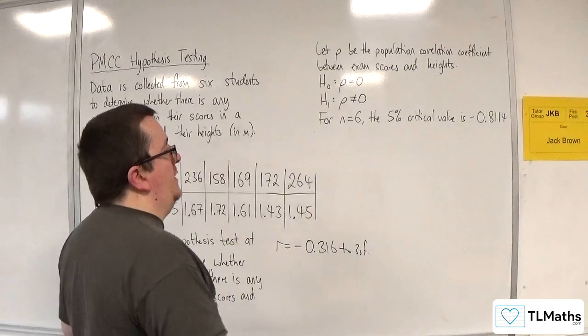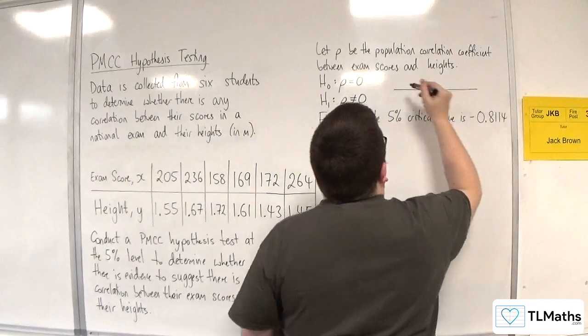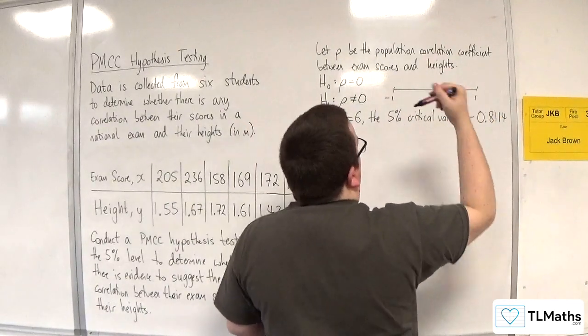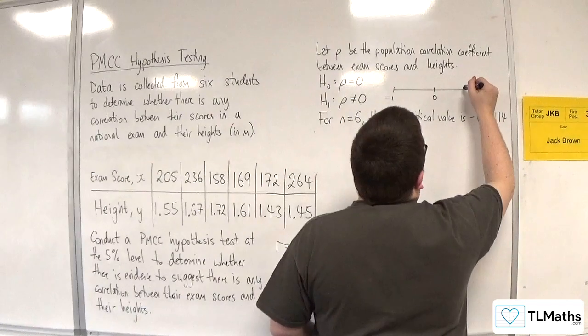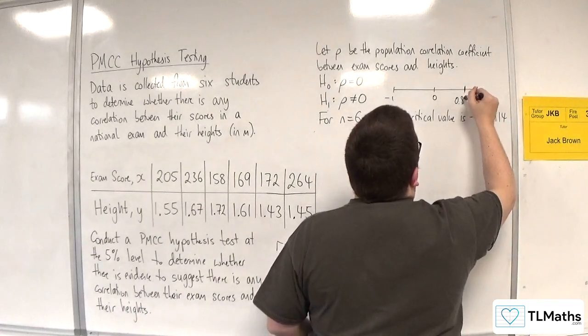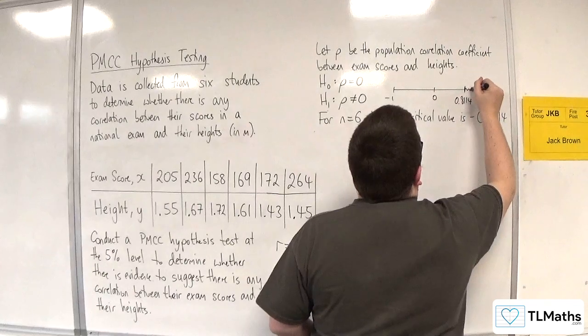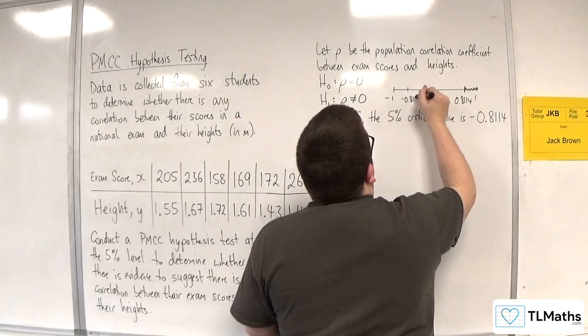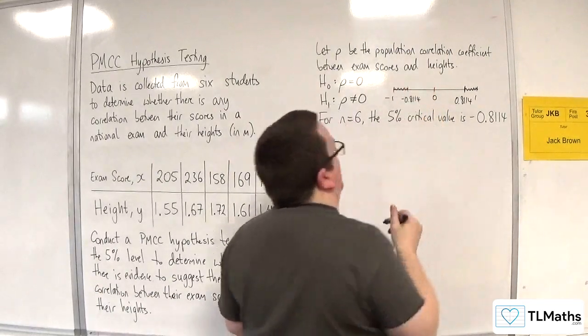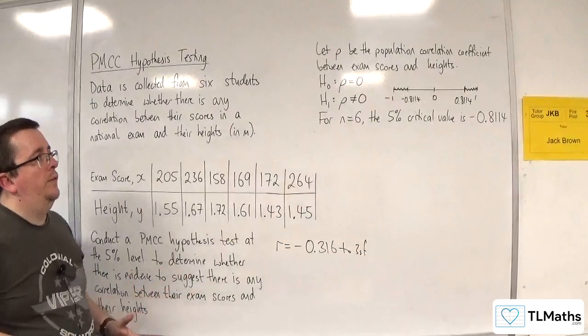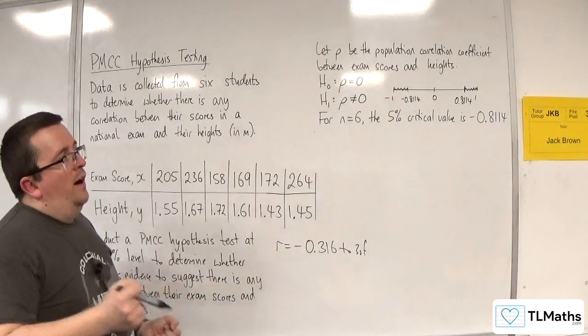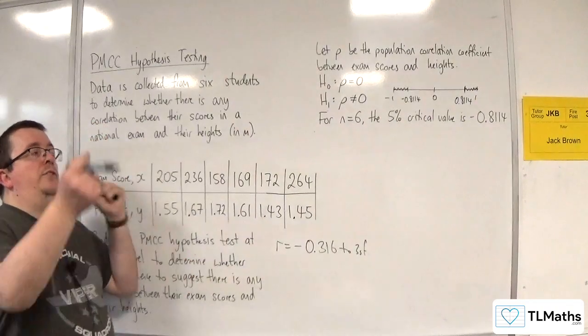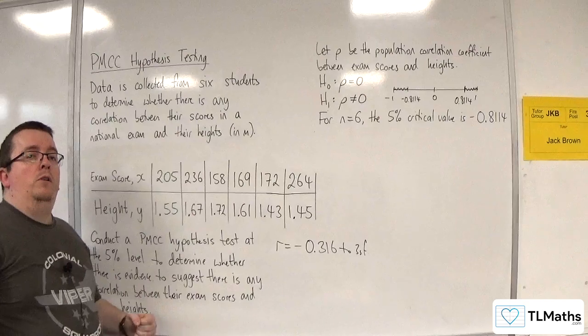Essentially, because it's two-tail, on your number line, here's minus one, here's zero, here's one. Your critical region is now given by 0.8114 there, and over here, minus 0.8114. It's those two regions that you're considering. If your R value gets into either of those two regions, then there is evidence to suggest that there is some correlation.